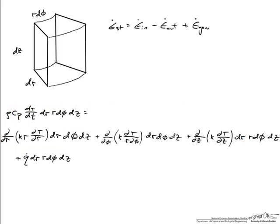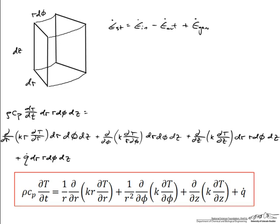And finally, the last thing to do is to divide by this dr times r d phi dz, divide both sides of the equation. It will fall out in the energy generation term, it will fall out in the energy storage term, and we'll see some combination of it in the net energy coming in minus energy leaving. And so here you have it, the heat diffusion equation in cylindrical coordinates.